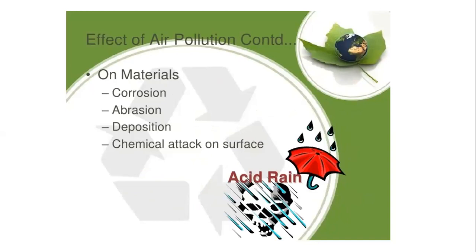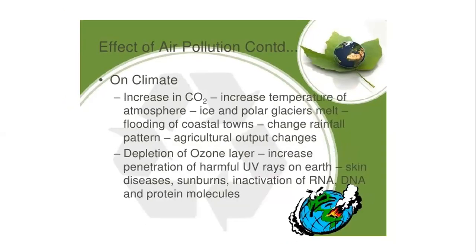On materials, pollution can cause abrasion, deposition, and chemical attack on surfaces. On climate, it increases carbon dioxide and atmospheric temperature — like global warming and the greenhouse effect. It causes polar glacier melting, coastal flooding, changes in rainfall pattern, changes in agricultural output, depletion of the ozone layer, and increased penetration of harmful UV radiation causing skin disease, and inactivation of RNA, DNA, and protein molecules.